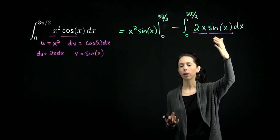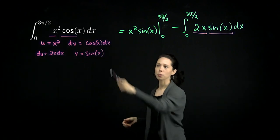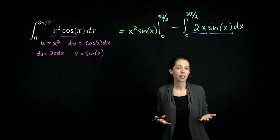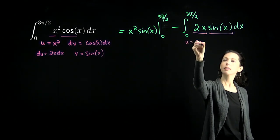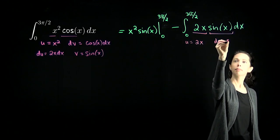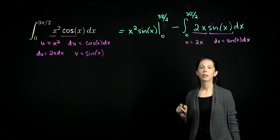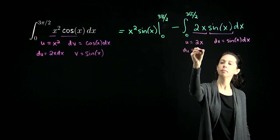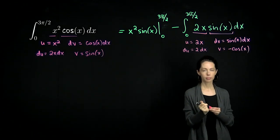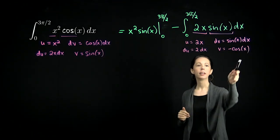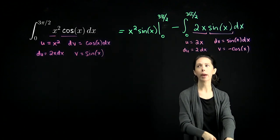For this second round, one term is 2x. If I anti-differentiate it, I get x squared — not better. If I differentiate it, I'm left with the constant 2 — constants are always great. For sine of x, differentiating gives cosine of x, which goes back toward where we started; anti-differentiating gives negative cosine of x, which is acceptable. So we do integration by parts again with u as 2x and dv as sine of x dx. That gives du equal to 2 dx and v equal to negative cosine of x. Be careful not to lose that negative. The term v du will be negative 2 cosine of x — something we can integrate right away.